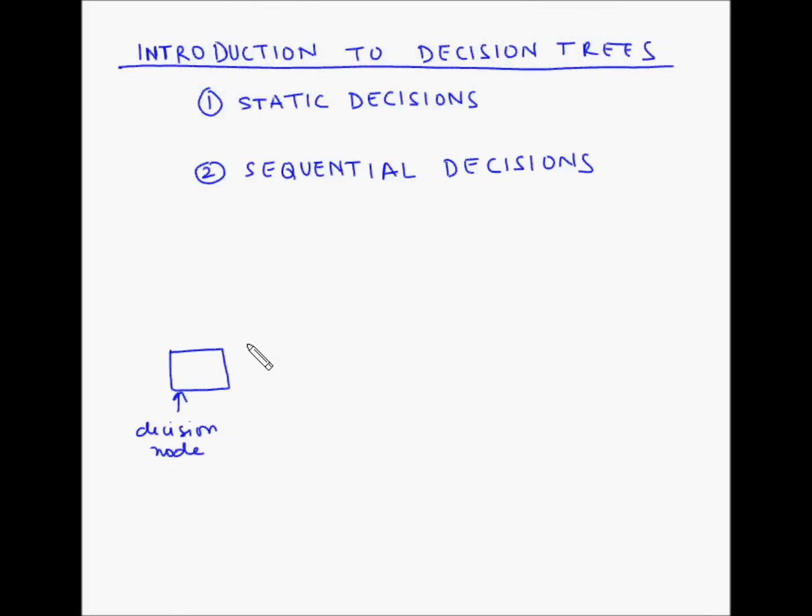Now from a decision node, you may have multiple branches coming out. This depends on the number of options you may have for decision making. These branches are known as decision alternatives.